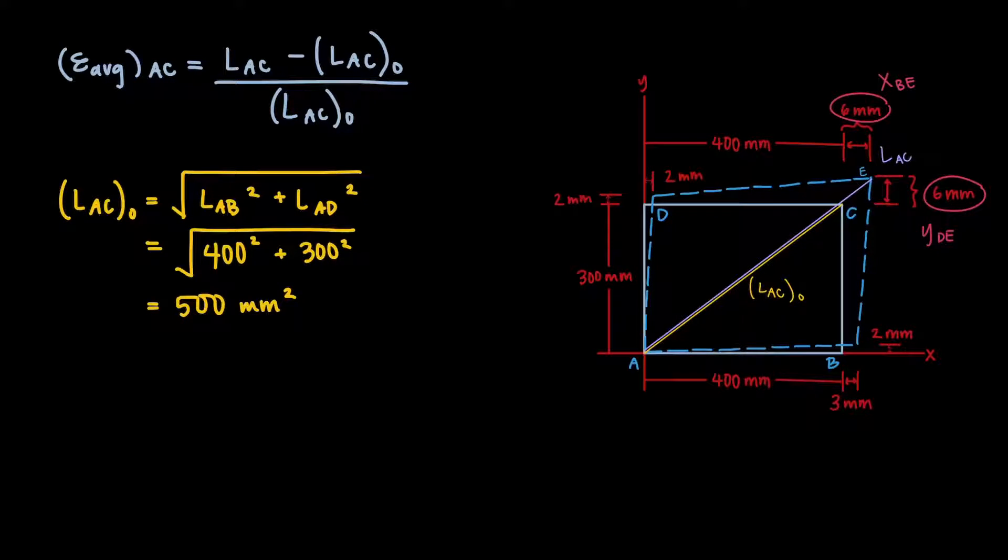And how much was the rectangle stretched in the y direction? Again, we'll break it into two. We already know the vertical distance from point A to D, which is 300 millimeters. To that, we'll add the vertical distance from D to E, which we'll call y_DE. That's 6 millimeters too.